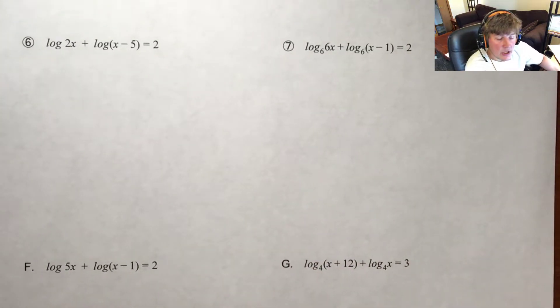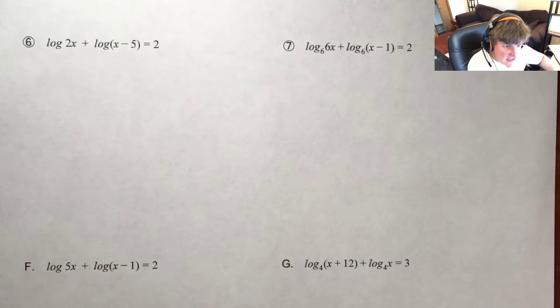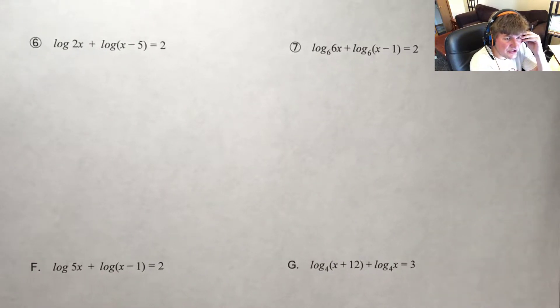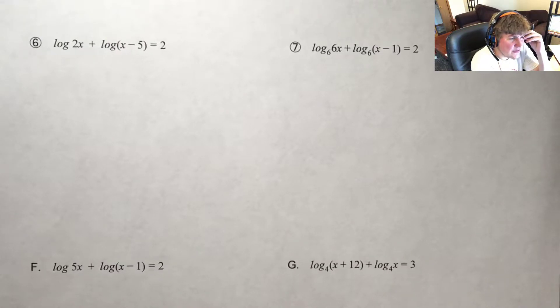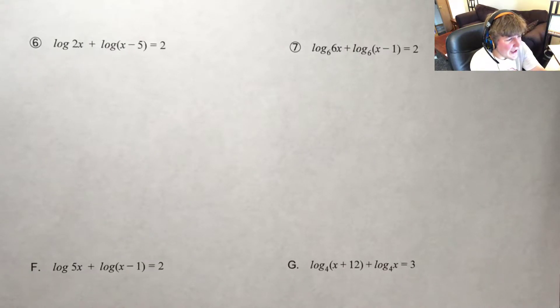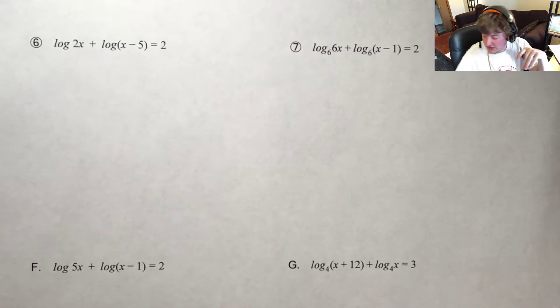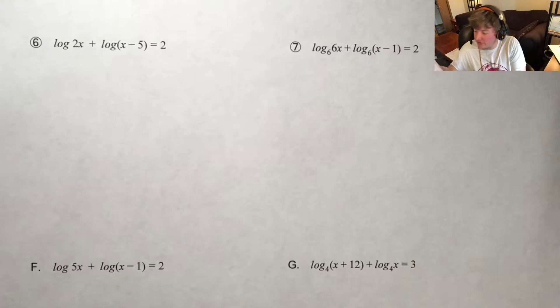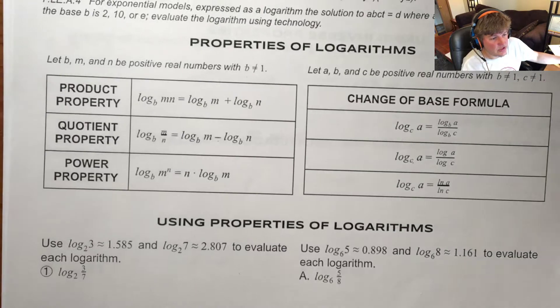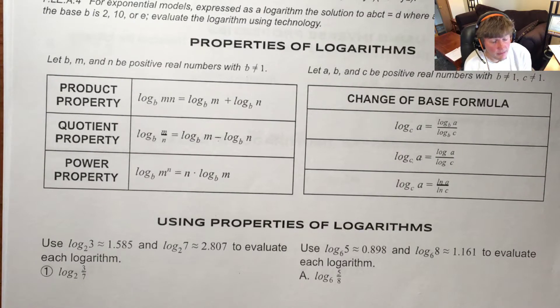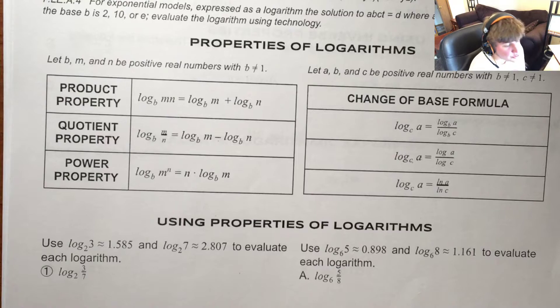So now we're on 6 and 7. As I look at these, I have addition between my logarithms here, and that's going to throw a little bit of a curveball, but realistically it's going to add a very minimal amount of work. So it is going to require that you know some of your properties and how to solve them. Specifically, we're going to want to know the product property, although you should know all of these properties.